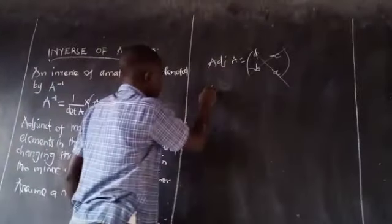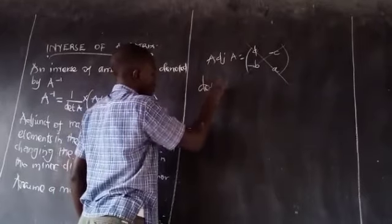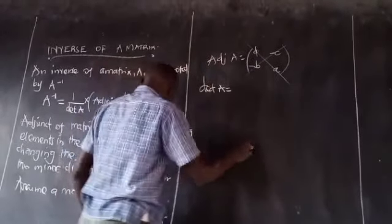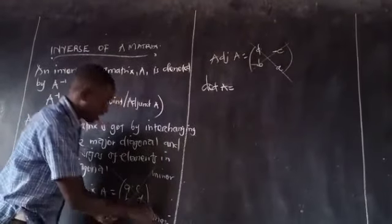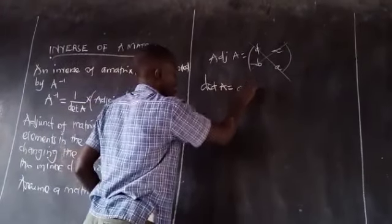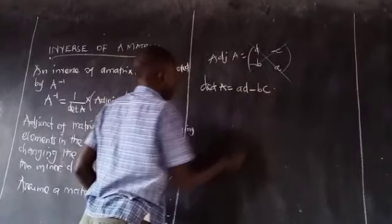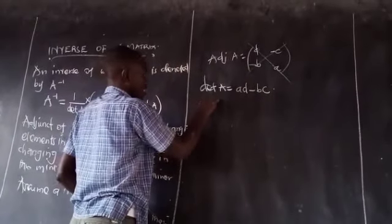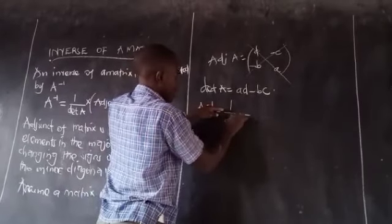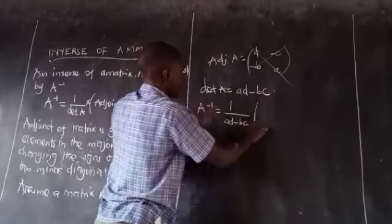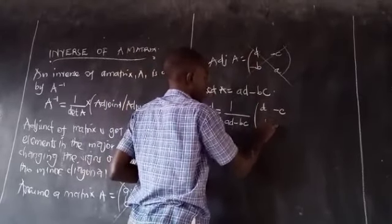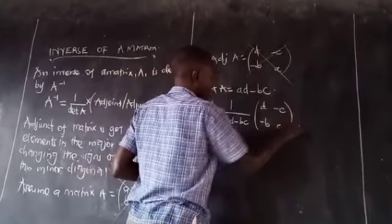This simply means that if we are able to compute the determinant of A — which is the product of elements in the major minus the product of elements in the minor, that is ad minus bc — we can then say that A inverse equals 1 divided by the determinant (that is ad minus bc) times the adjoint, which is [d, -c, -b, a]. That is all.